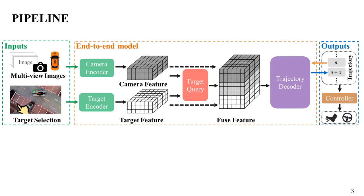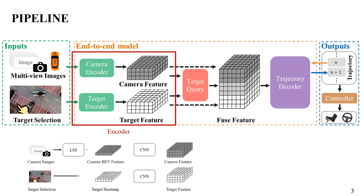We show the pipeline of our method here. The encoder has two inputs: one obtains the camera's BEV features using surround camera images through the LSS method, the other generates a target heatmap based on the selected parking slot and then extracts the target features using a convolutional network.